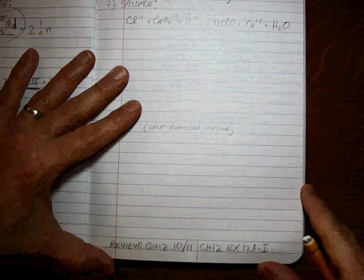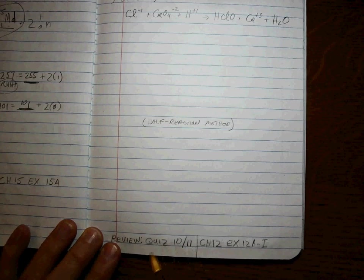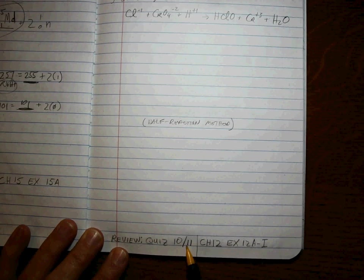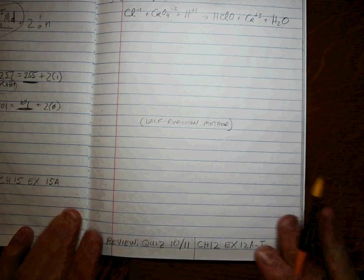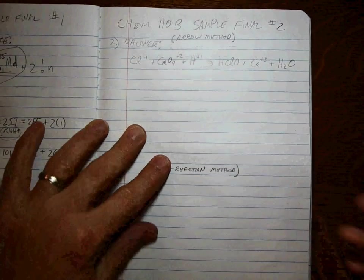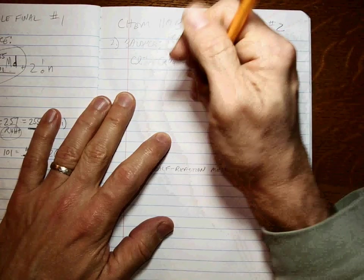If you need more practice, you're going to do quiz 10 and quiz 11, chapter 12 exercises 12a through 12i. Alright, so first step, oxidation numbers.